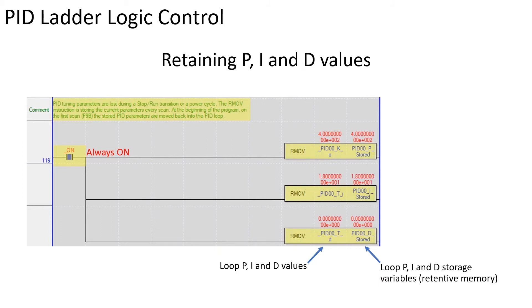The real move instruction is used to constantly move the operational PID values to retentive memory. These variables are created in K memory by the programmer. The values are constantly written to retentive memory in the event manual tuning adjustments take place during operation.